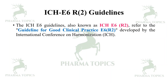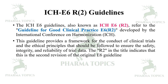Let us know what is ICH E6 R2 guidelines. The ICH E6 guidelines, also known as ICH E6 R2, refer to the guideline for Good Clinical Practice. E6 R2 was developed by the International Conference on Harmonization. The guideline provides a framework for the conduct of clinical trials and the ethical principles that should be followed to ensure the safety, integrity, and reliability of clinical trial data. The 'R2' indicates that it is the second revision of the original E6 guideline.